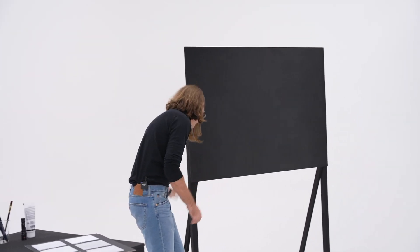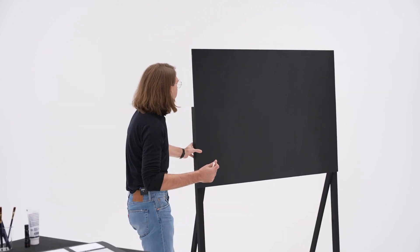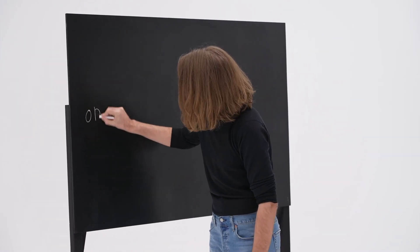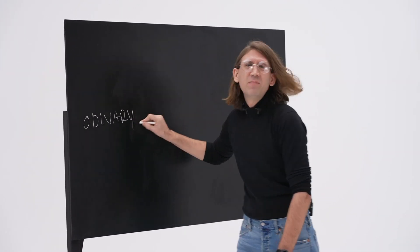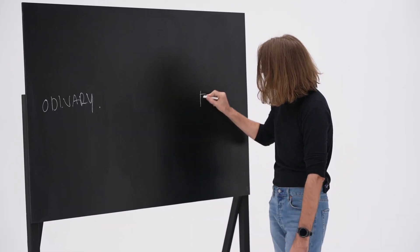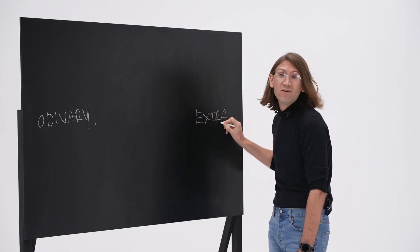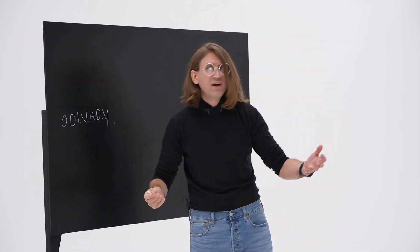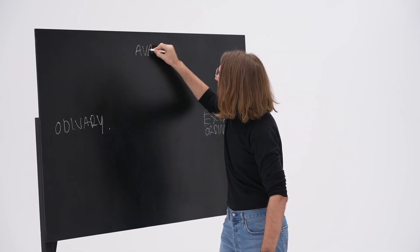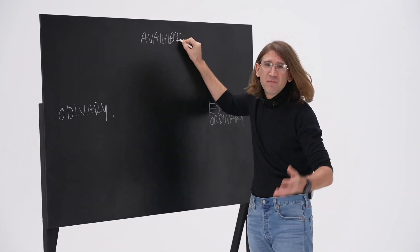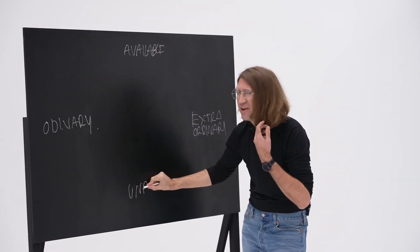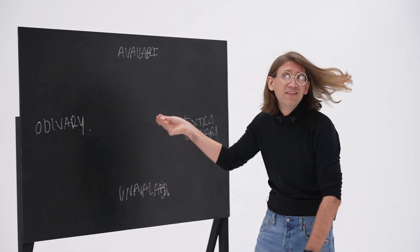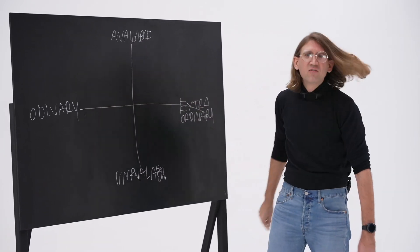When you think about paint, you have ordinary paints, the sort of thing you use every day. You have extraordinary paints. Then you have materials that are available, easily available, and then you have materials that are unavailable. Me and the guys, we think about this all day long. We're obsessed with this. So this axis here is where we like to play.